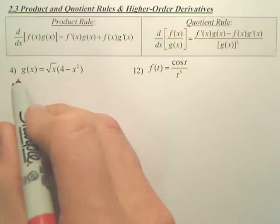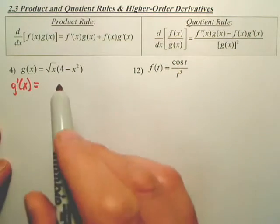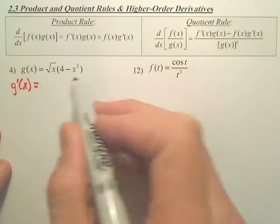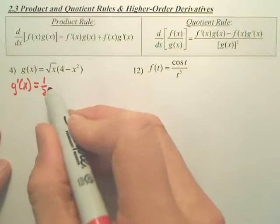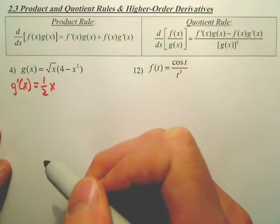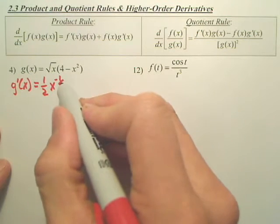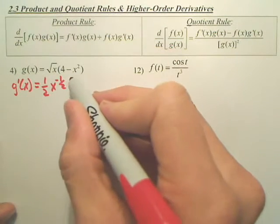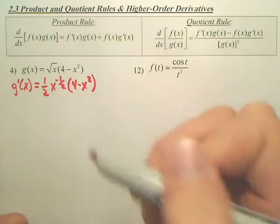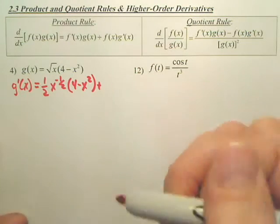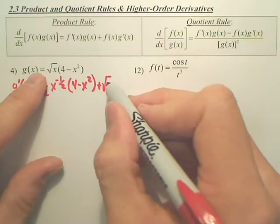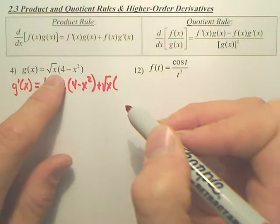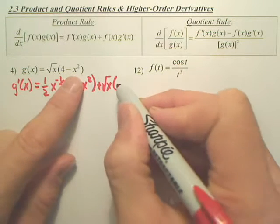So we're going to take the derivative of g of x, and the derivative goes derive the first piece. So the derivative of this, you have to think of that as x to the 1 half. x to the 1 half will bring a 1 half out front, and then you have a negative 1 half power. That's the derivative of x to the 1 half. Then we leave 4 minus x squared.